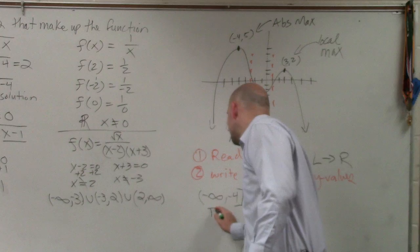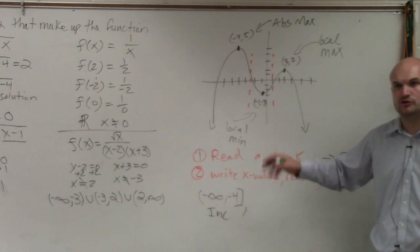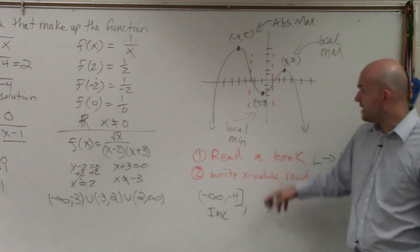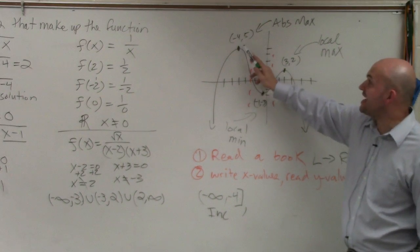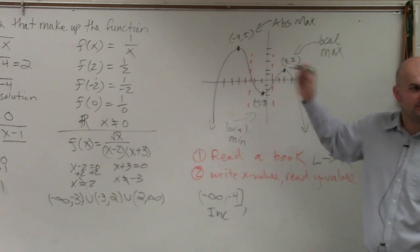Then, so it's increasing. This is not domain and range, so I'm not going to union them. I'm just going to put a comma. Then, from the x value negative 4 to the x value negative 1,